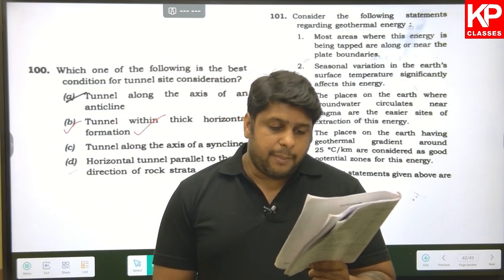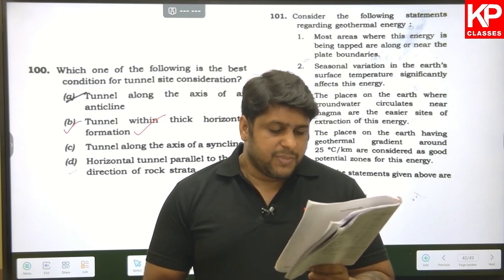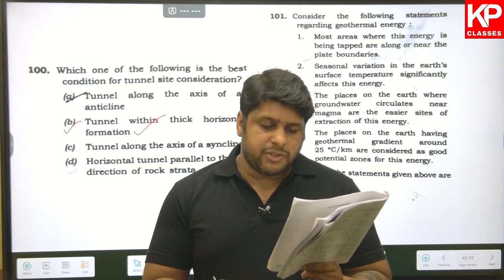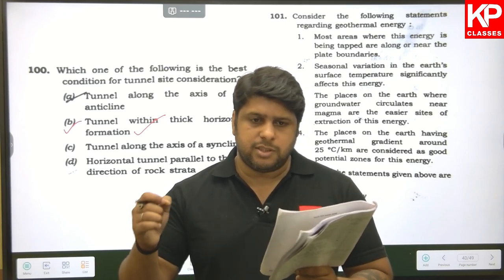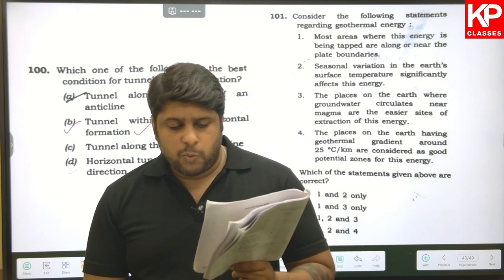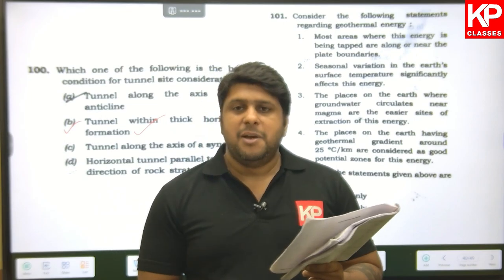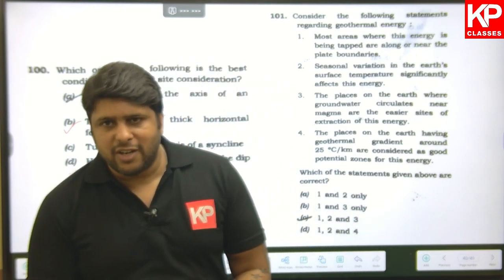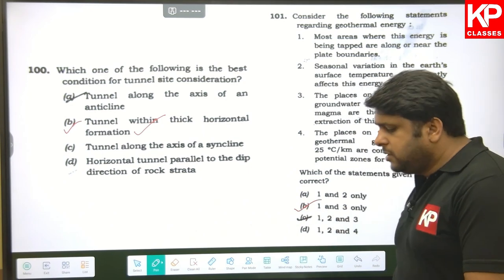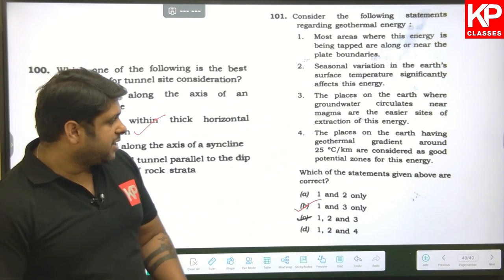Question one hundred and two: regarding geothermal energy — most areas where this energy is being tapped are along or near plate boundaries (correct). Seasonal variations in Earth's surface temperature significantly affect this energy — no, this is wrong. So having marked one wrong, with statements one and three correct, B is the answer. No need to read all options and waste time.